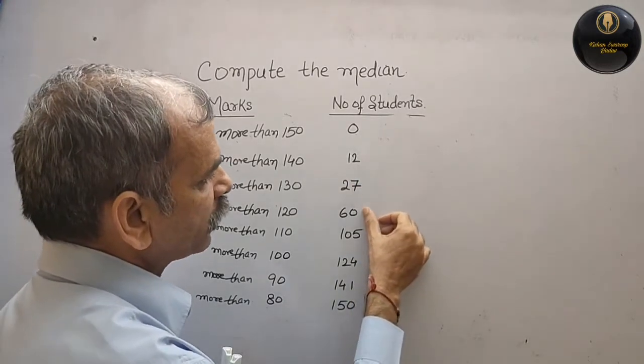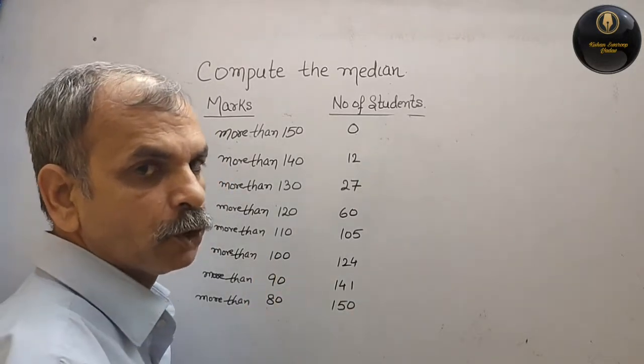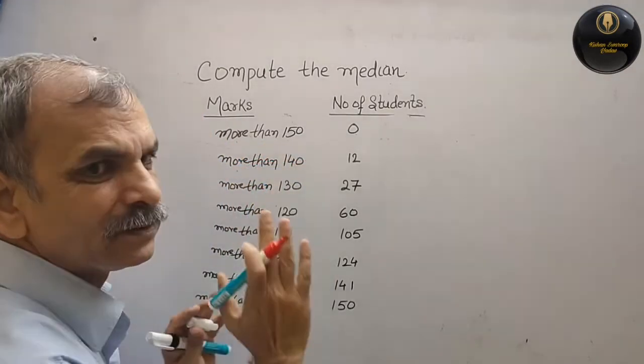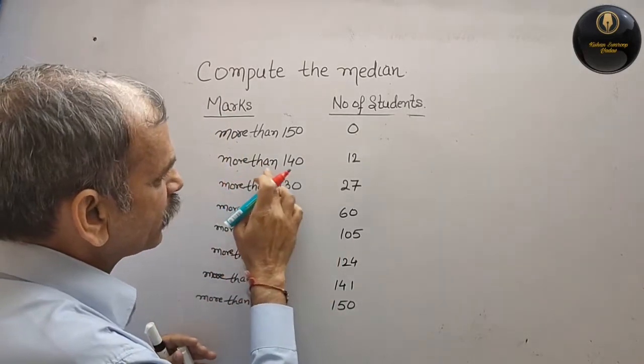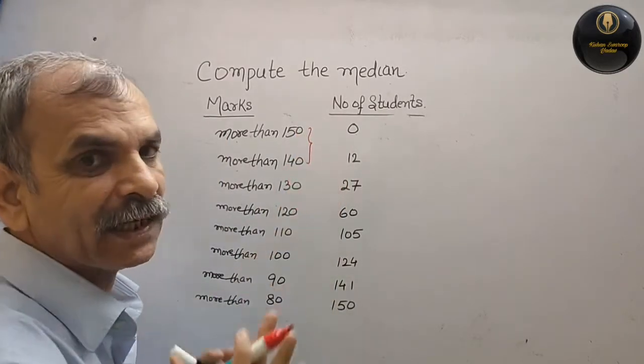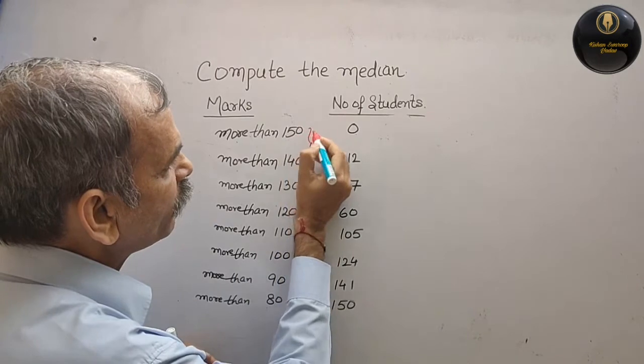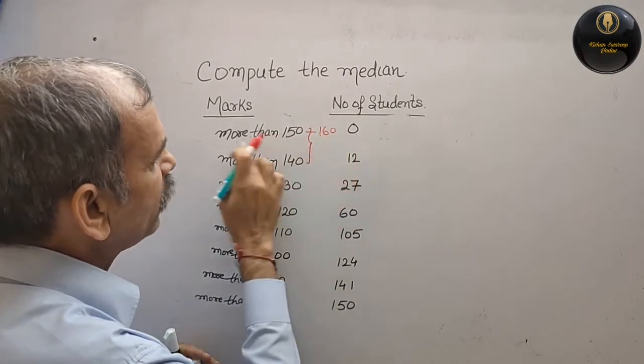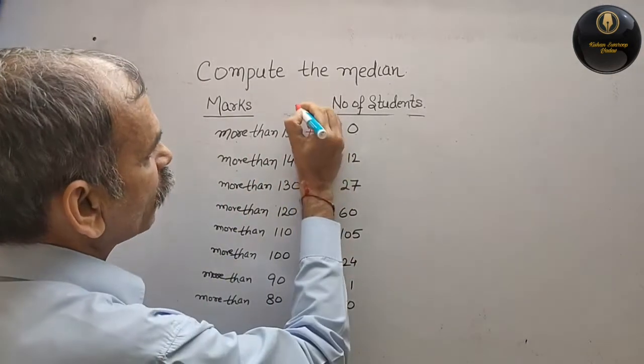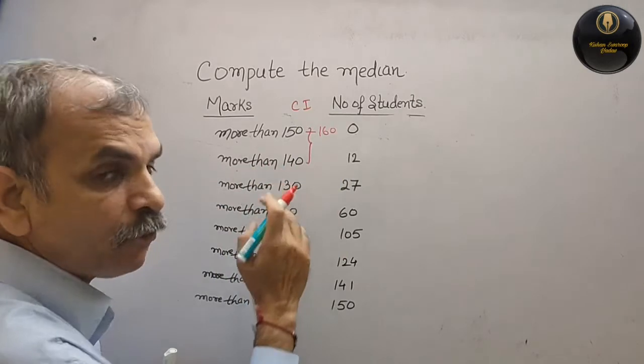So it's cool, it's like a boy. First he has written more than 150, second more than 140. Now you check here, so you can go up. The difference is 10, the difference here, that means it should be 150 to 160, then only more than 150 will come. 150 to 160, so now this is your class interval. More than 140 means 140 to 150.